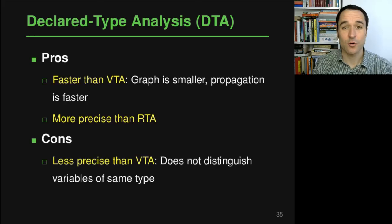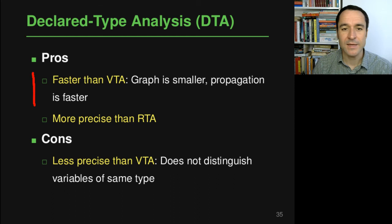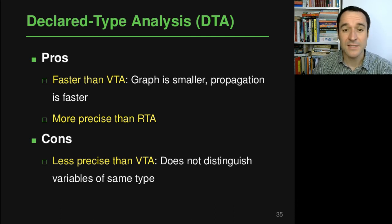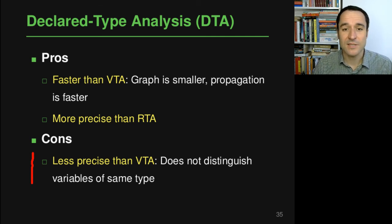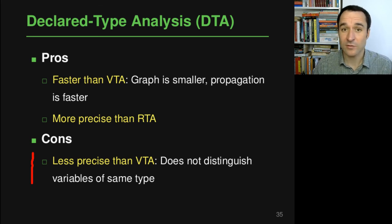To summarize the pros and cons of DTA: it's definitely faster than VTA because the graph is much smaller, allowing it to scale to larger programs, and it's more precise than rapid type analysis. On the downside, DTA is less precise than variable type analysis because it does not distinguish different variables with the same statically declared type, merging all their information in a conservative way to avoid missing any type — which results in less precision than VTA.